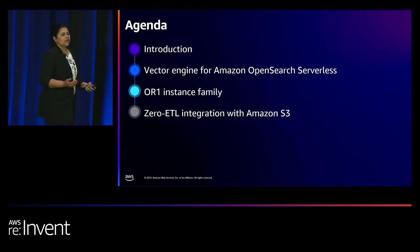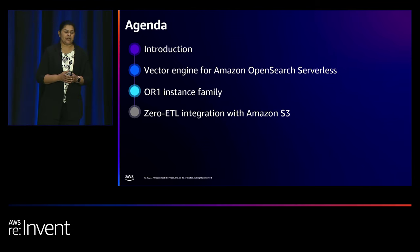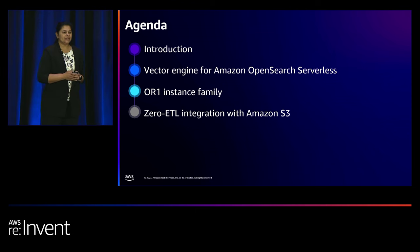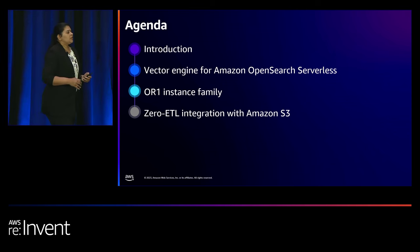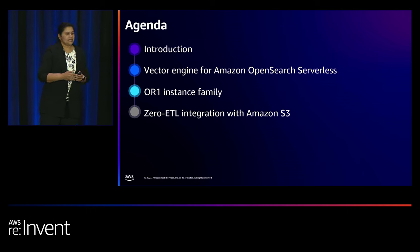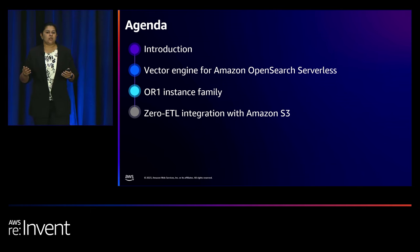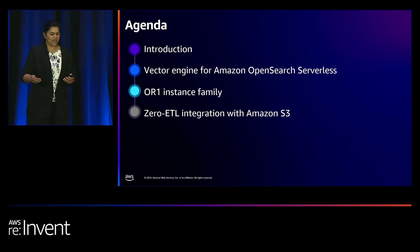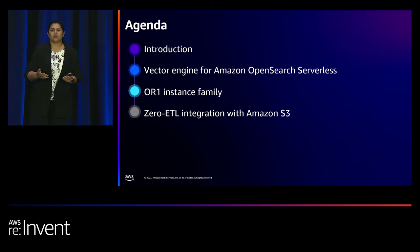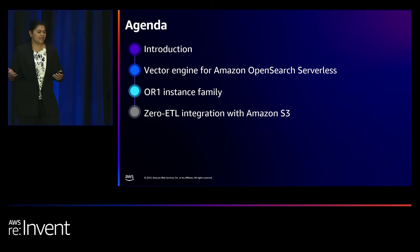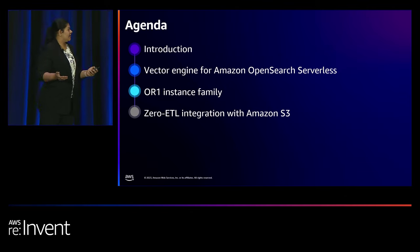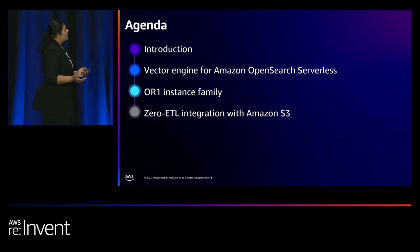A quick look at the agenda: we'll start off with the recently announced Vector Engine for OpenSearch Serverless. Then we'll talk about the new OR1 instance family that gives you up to 30% price performance benefits. And then Joshua will talk about one of the most awaited features, which is zero ETL integration with Amazon S3.